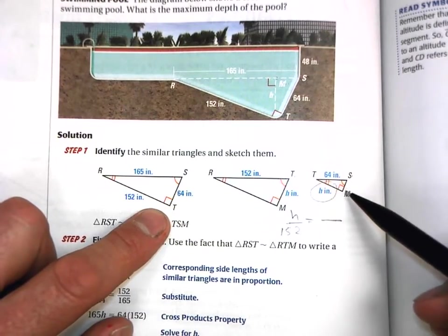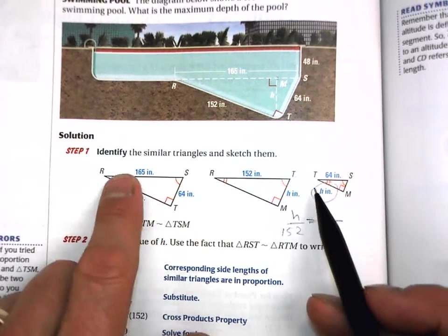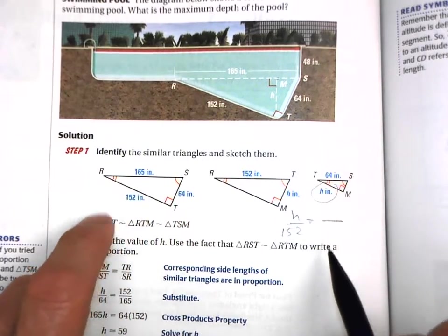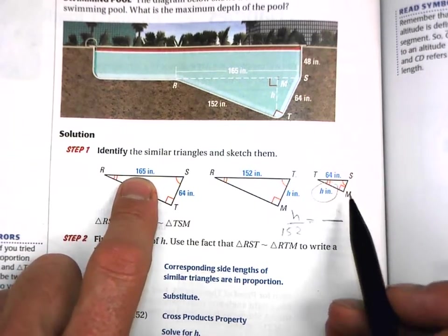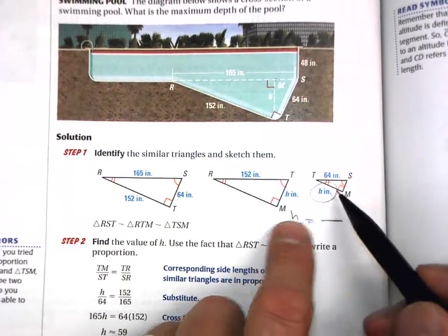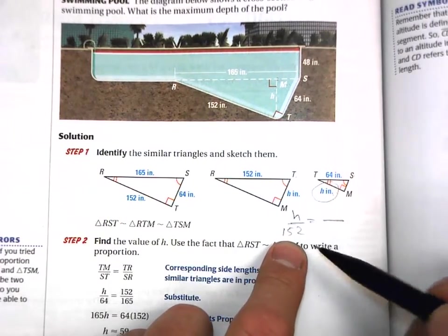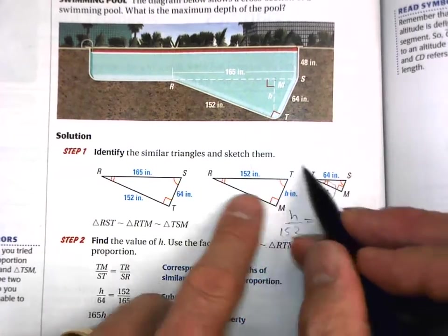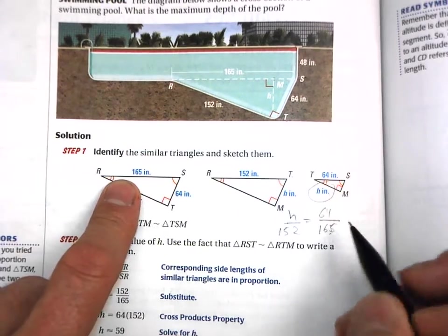So in this case, I want to solve for H. So here is the height, which is this distance from your diagram. Let's do our proportion. H over 152 equals, and now what I need to do is find two other corresponding sides of these same triangles that I can fill in numbers. My H, I started with H, that's the small. So small on top of big. Therefore, I want this small 64 here on top of the big 165.